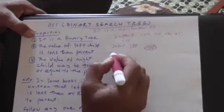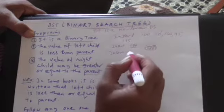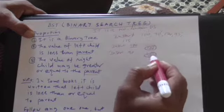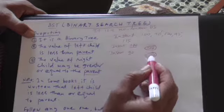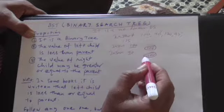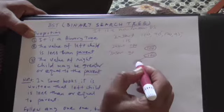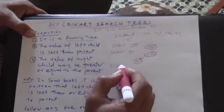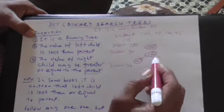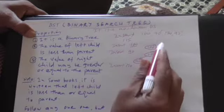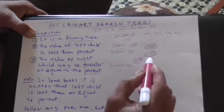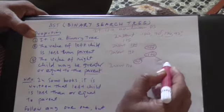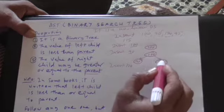Then I insert the second value, 90. I start at the root, and 90 is less than 100, therefore it should go to the left side. Then I insert 120. Always you start at the root. 120 is greater than 100, therefore it should go to the right side.